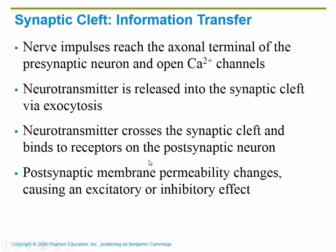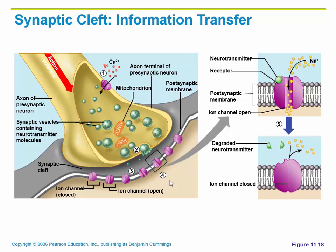Once it diffuses across the synaptic cleft, it's going to bind to receptors on the other side. At that point, we are going to either have something happen or inhibit something from happening. You can see the direction of the action potential — calcium ions are rushing in, and here are those synaptic vesicles, which contain the neurotransmitters. They release the neurotransmitter via exocytosis, and then on this side a receptor receives that message.